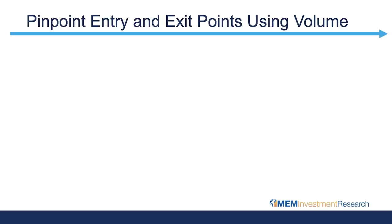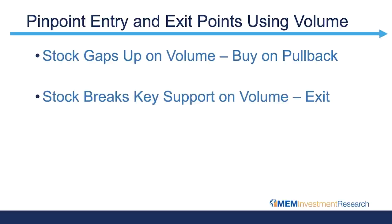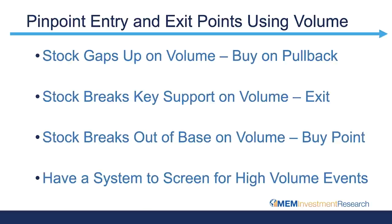Let's talk about pinpointing your entry and exit points using volume. One key way: if a stock gaps up on volume — you'll see this often around earnings season — you'll want to buy that stock on a pullback; that gap up on volume can be very bullish. Or if a stock breaks what I call key support on volume, that's going to be your signal to exit. Oftentimes before a stock's longer advance, it will break out of a saucer-like base on volume, and that is often an ideal buy point. You do want a system to screen for these high-volume events using that average volume over the last 50 days as your base point.